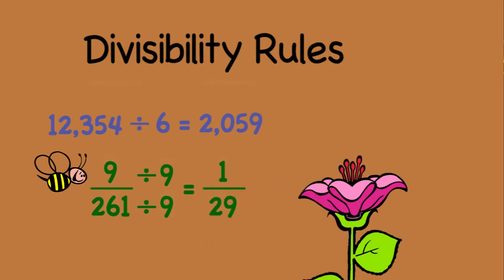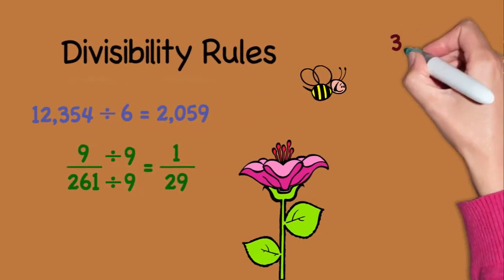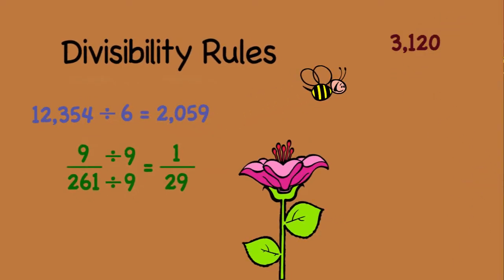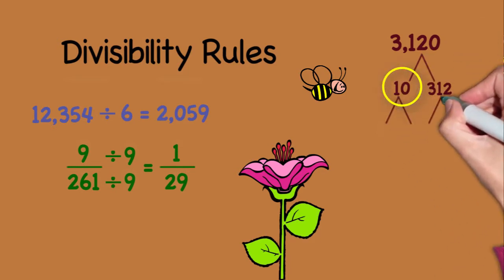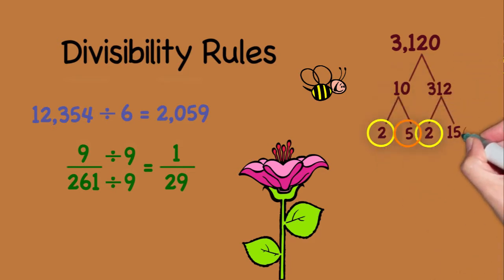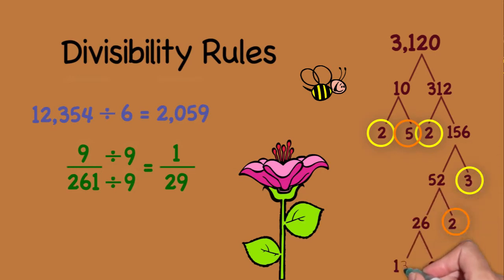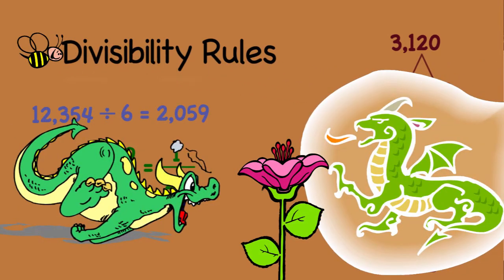Also, if we are asked to find the prime factorization of 3,120, it is helpful to know the divisibility rules for 10, 2, and 3. These are just two of the many ways divisibility rules can help us in math. In this video, two of my students will demonstrate how to use the divisibility rules.